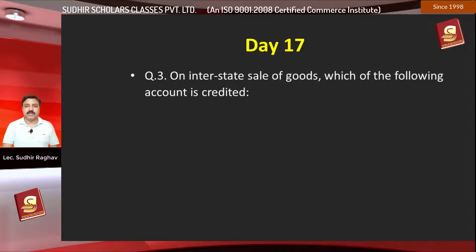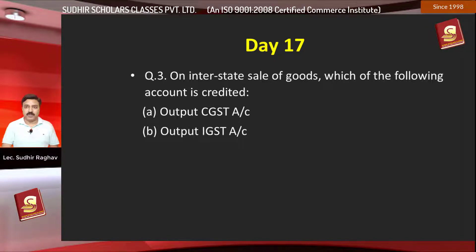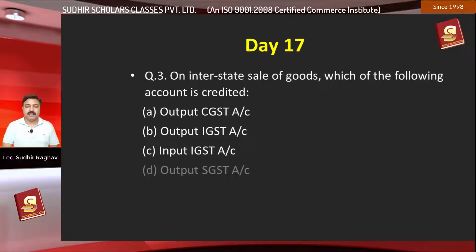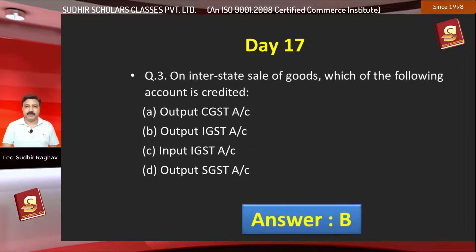Question number 3: On interstate sale of goods, which of the following account is credited? Option A, output CGST; Option B, output IGST; Option C, input IGST; Option D, output SGST. The right answer is option A.